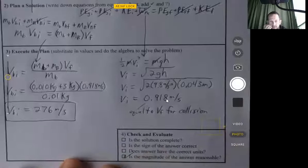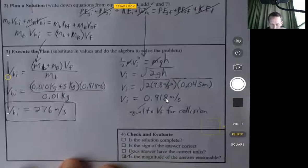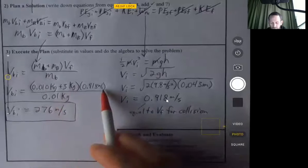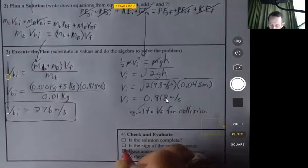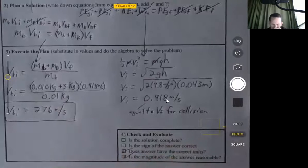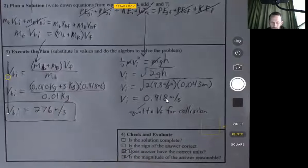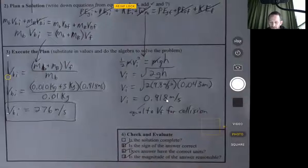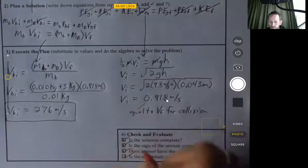That's reasonable. Does it have the correct units? We have kilograms here divided by kilograms, so that cancels, and we get units of meters per second. So the units are correct. Is the sign of the answer correct? It did come out positive, which is to the right. And so it only makes sense that the bullet was traveling to the right. And that was the only thing we were supposed to solve for.